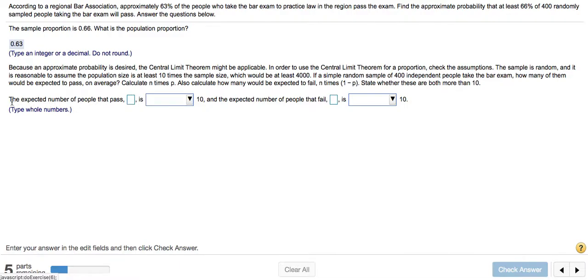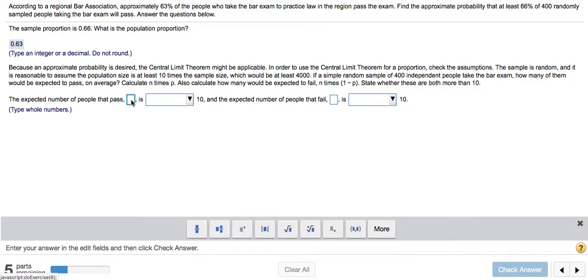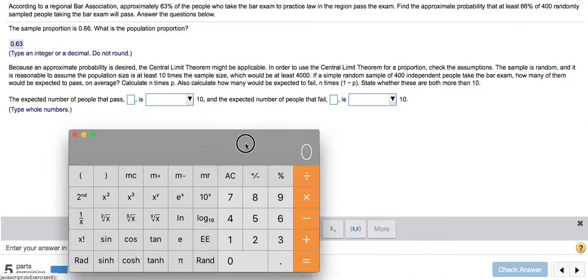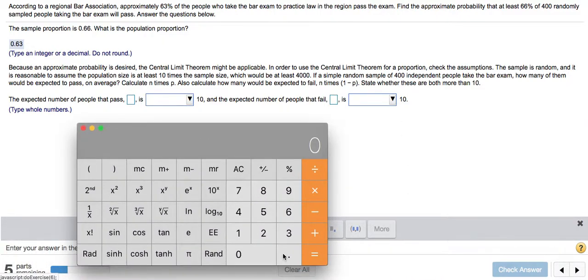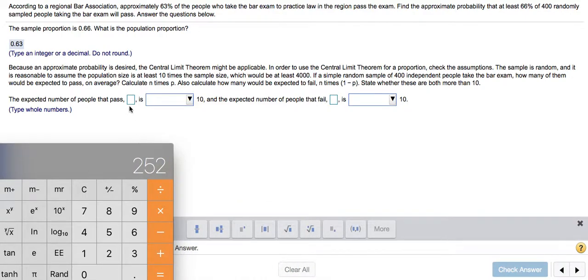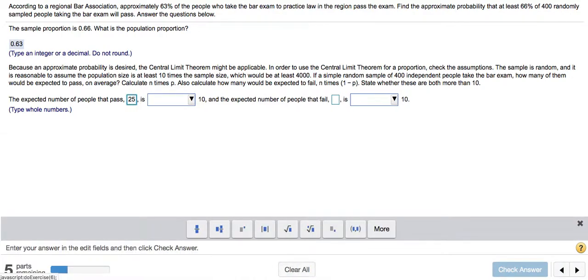So to start with, the expected number of people that pass is going to be 400 times this 0.63. So that's n times p. I'm going to do that in a calculator. So that was 0.63 times 400, so 252 people. And that is certainly greater than 10. So that's good.